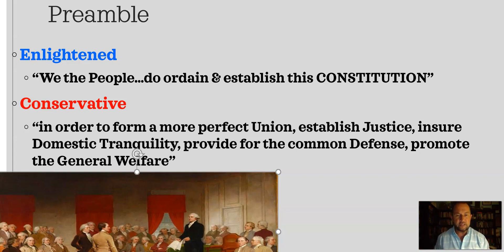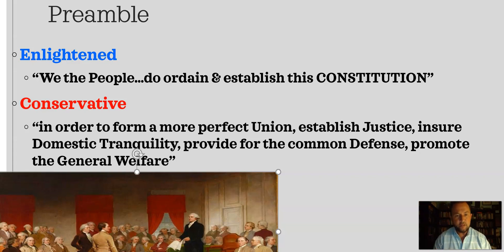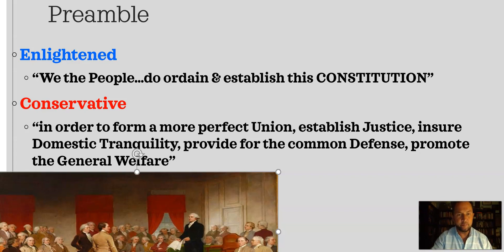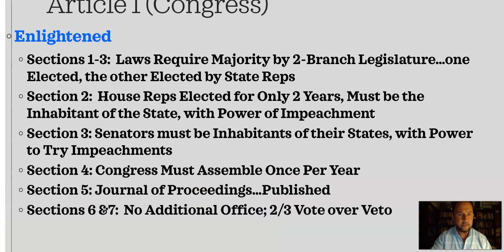For this assignment, I want you to have three lists — enlightened, conservative, and pragmatic — with at least three to four examples under each, and briefly defend in a sentence why you put it in that category. I'd like you to have something from at least the first three articles: Article 1 is Congress, Article 2 is the executive or president, and Article 3 is the Supreme Court and judicial system.